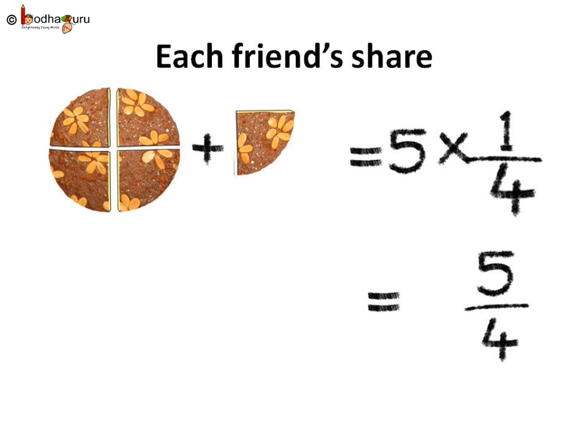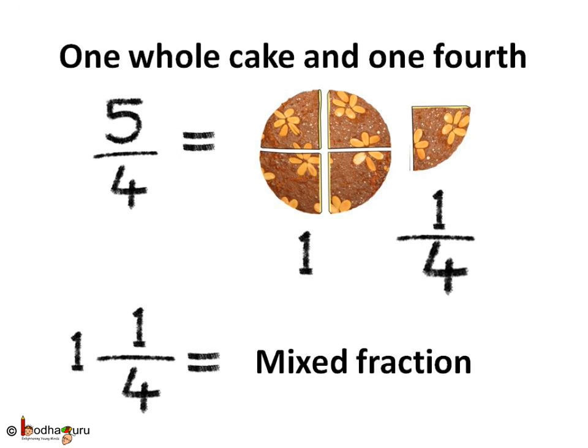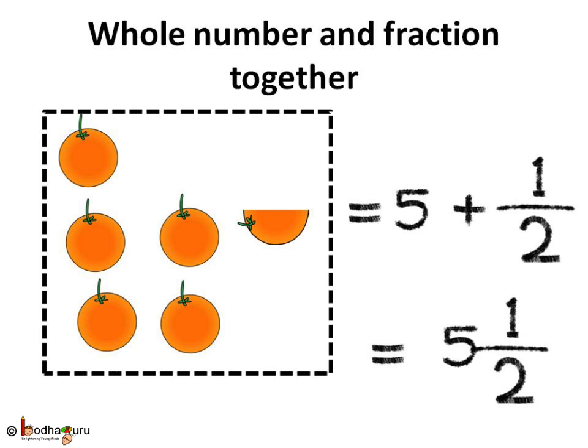Now when we talked of five by four parts of cake, then it is actually one cake plus one fourth part of the whole cake. We can write it like one one fourth. It is called mixed fraction as it has a whole number part which is one here and a fraction part which is one by four here. Basically it is a mix of both whole number and fraction. Hence the name mixed fraction. So a whole number and fraction can be expressed together as a mixed fraction. For example, five oranges and a half of an orange is equal to five one by two oranges. Understood?